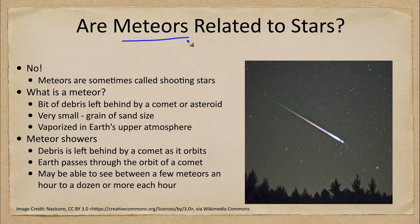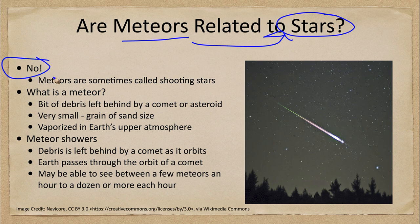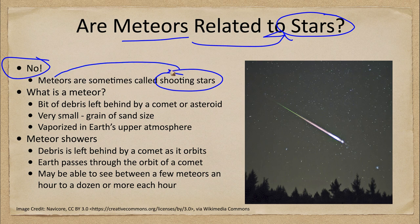So are meteors related to stars at all? What is the relationship? Well, there is none. Meteors have nothing to do with stars other than the fact that we sometimes call them shooting stars. That's about all meteors and stars have in common — we misname them as shooting stars.